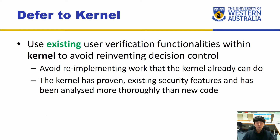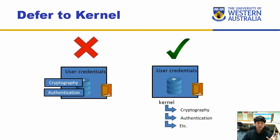Finally, there's the deferred kernel pattern. Basically, it says don't reinvent the wheel — use existing user verification functionalities within the kernel to avoid reinventing decision control. Many existing kernels provide these functionalities so you don't have to redo those verifications yourself, because doing it yourself may result in misconfiguration that makes the system vulnerable. For example, rather than implementing your own crypto and authentication, use the ones provided through the kernel.